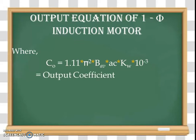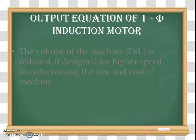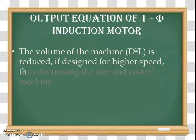In the output equation Q = Co × D²L × Ns, Co = 1.11π² × Bav × AC × Kw × 10⁻³ is known as the output coefficient. From the output equation we can write that D²L, the volume of the machine, equals Q divided by Co × Ns. From this, we can say that volume D²L is inversely proportional to both the output coefficient and synchronous speed.